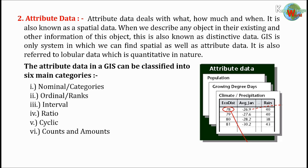The six categories are: number one, nominal or categories; number two, ordinal or ranks; number three, interval; number four, ratio; number five, cyclic; and number six, counts and amounts.